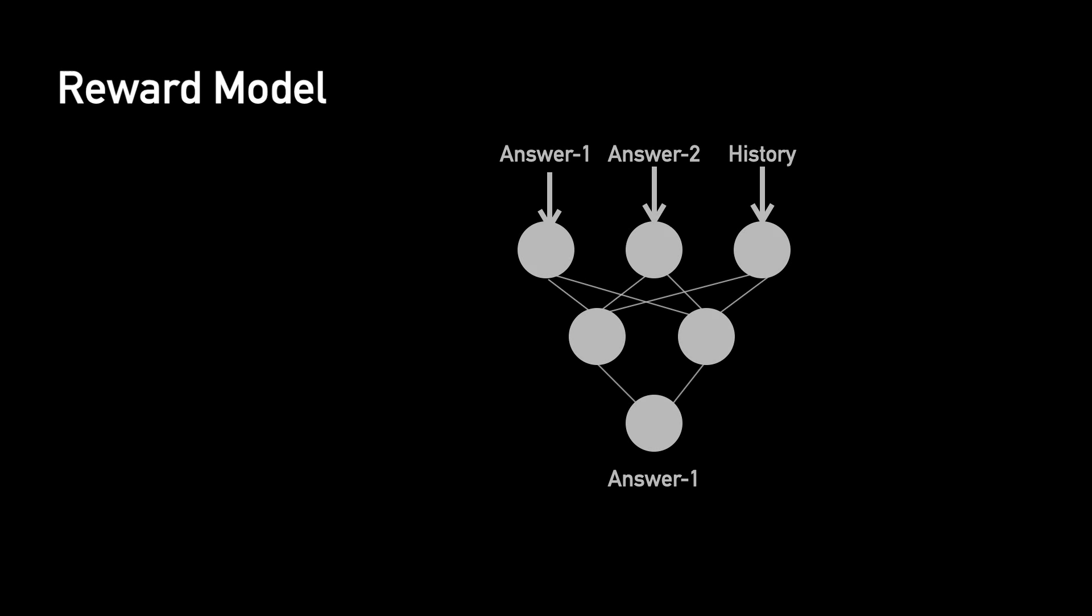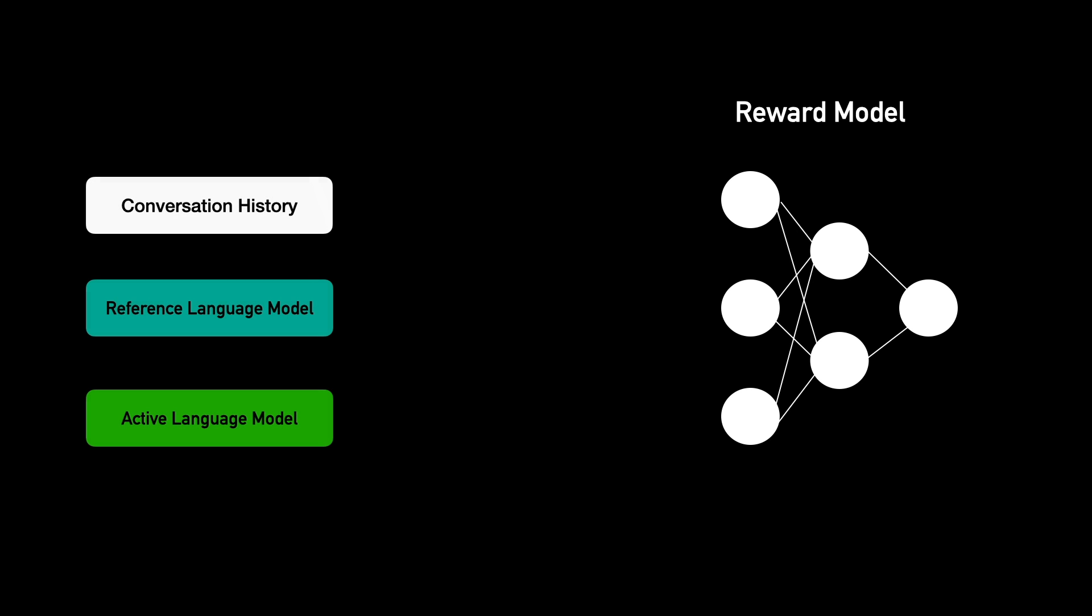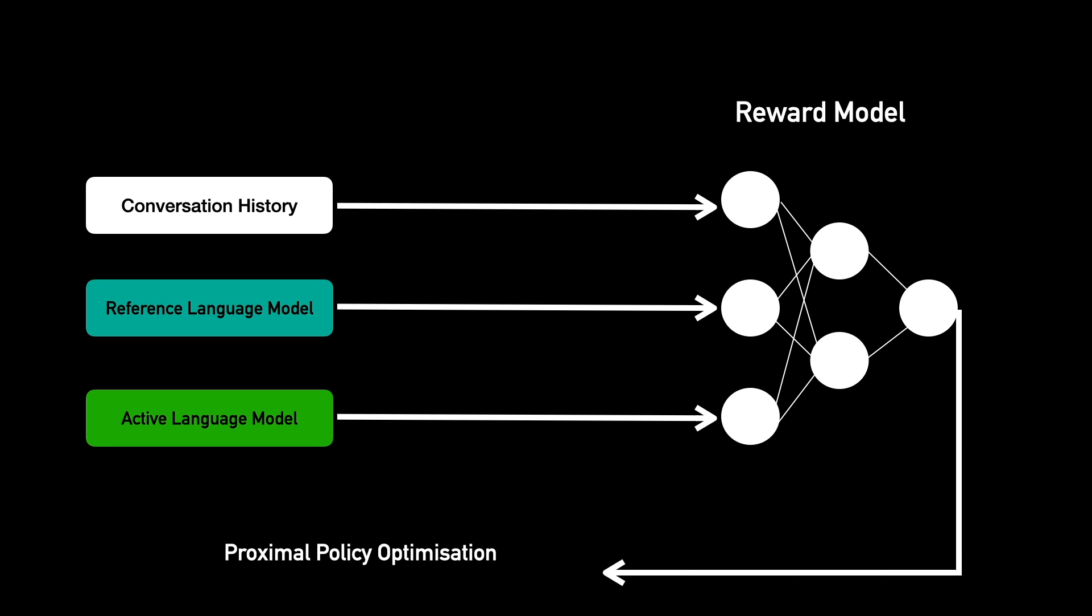Now that we have our reward model, we can finish setting up the reinforcement learning environment. At any moment, the environment has two language models, one in the active state and the other one in the reference state. The reward model takes the response from both the models and the conversation history, and then updates the parameters of the active language model using a training process called proximal policy optimization.